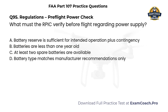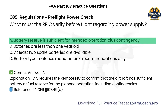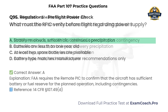Regulations. Pre-flight power check. What must the remote PIC verify before flight regarding power supply? A. Battery reserve is sufficient for intended operation plus contingency. B. Batteries are less than one year old. C. At least two spare batteries are available. D. Battery type matches manufacturer recommendations only. Correct answer: A. FAA requires the remote PIC to confirm that the aircraft has sufficient battery or fuel reserve for the planned operation, including contingencies.